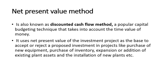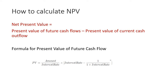Net Present Value is calculated as the present value of future cash flows minus the present value of the current cash outflow. The formula for present value of future cash flows — the annuity formula — is: Present Value = Amount divided by interest rate, multiplied by the factor (1 minus 1 divided by (1 plus interest rate) raised to n), where n is the period.